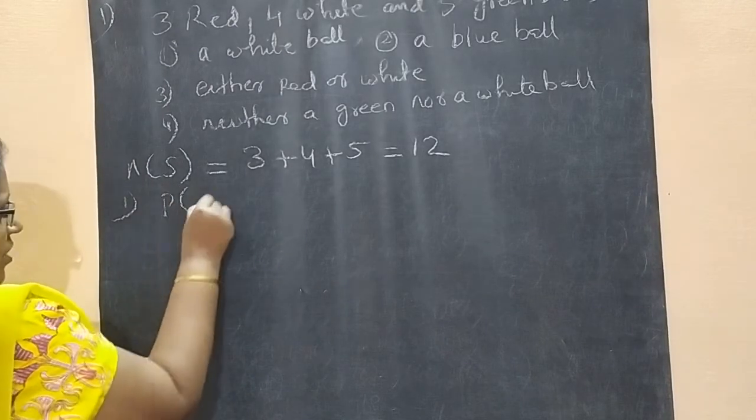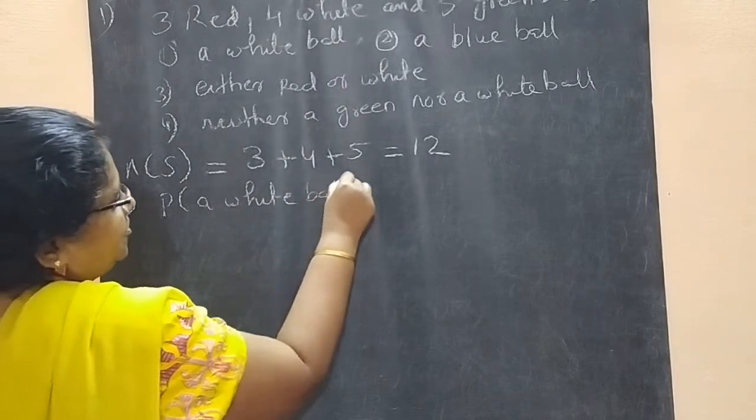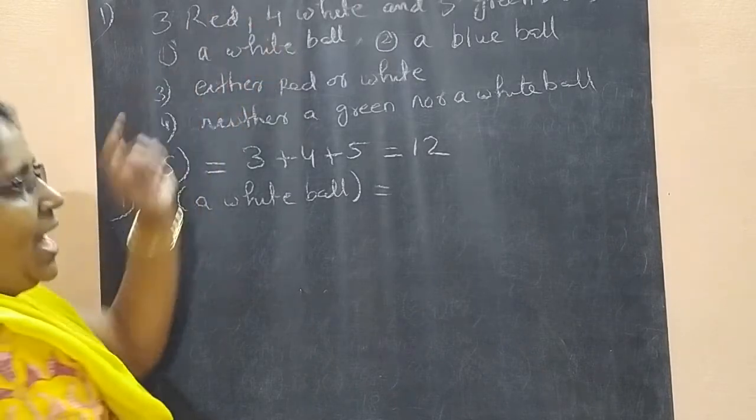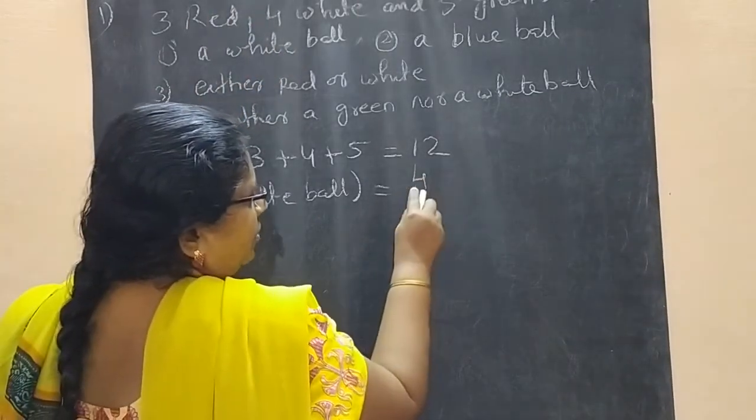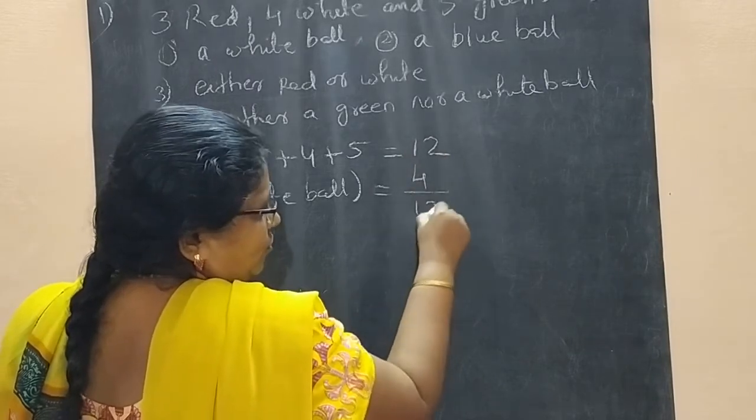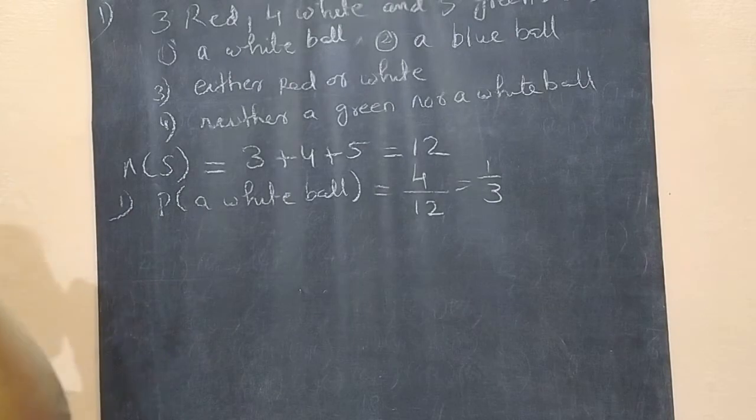So, probability of getting a white ball is equal to how many white balls? 4 are there. So out of 12 balls, 4 are white. So 4 by 12, 1 by 3 will be the probability.